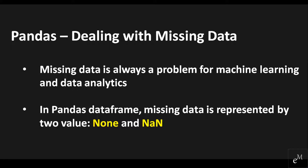Missing data can occur where no information is provided for one or more items or for a whole unit. Missing data is always a problem for machine learning and data analytics. Very often it causes a lot of issues in the accuracy of model predictions because of poor quality of data caused by missing values. In these areas, missing value treatment is a major point of focus to make their models more accurate and valid.